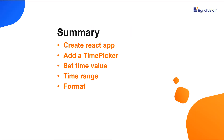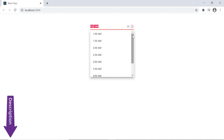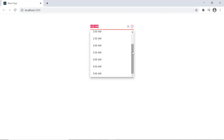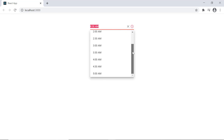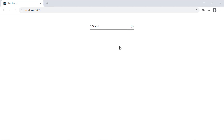Let me recap what we have seen so far. I showed you how to create a React app using the create-react-app command and add the Syncfusion React time picker component to it. I explained how to configure component features like setting time values and formats. You can download a working example from the GitHub link in the description below. You can also see if you are eligible for a community license, which will provide you with a free license key to use our products. Thank you for watching. If you found it useful, give it a like and subscribe to our channel.